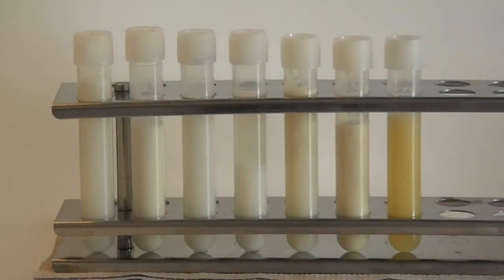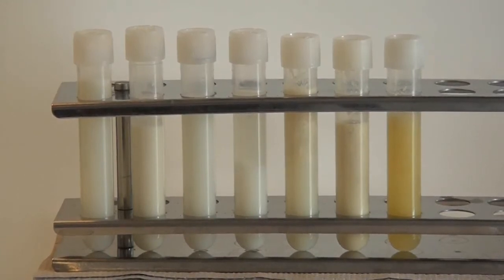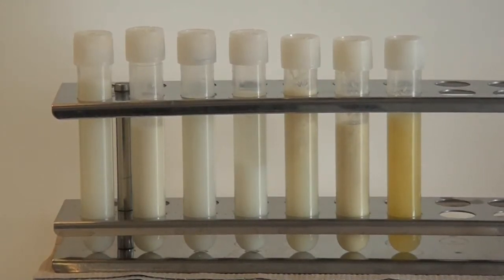Tubes from left to right contain udder secretions in decreasing quality, from clinically inconspicuous to strongly impaired. When these secretions are moved, clots become more visible in some tubes.